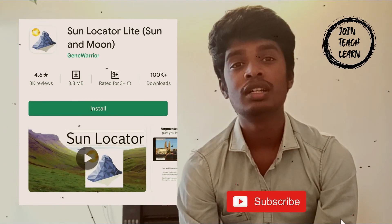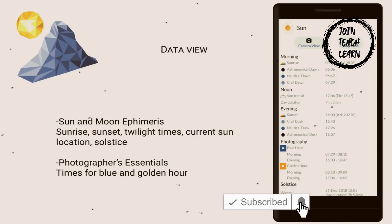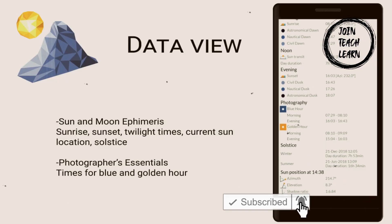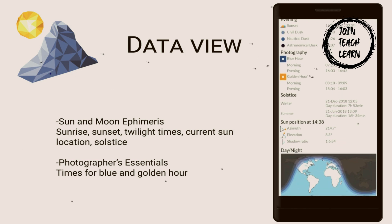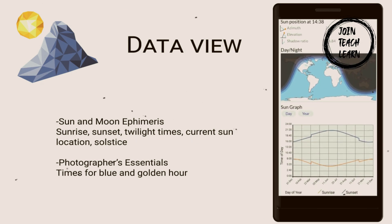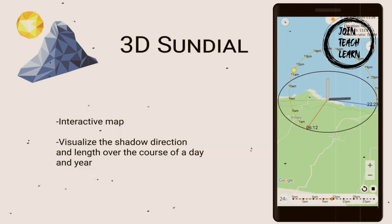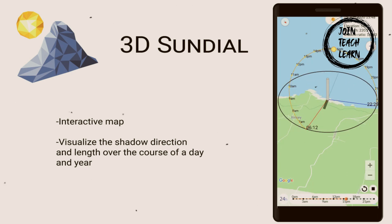Third one: Sun Locator Light. This is my favorite app, which is used to identify the location of the sun, the sun path, and the shadow angle, which is very much helpful in the construction field.